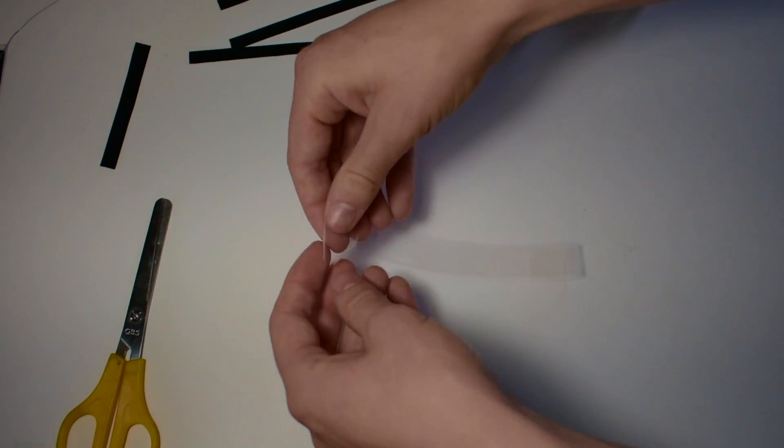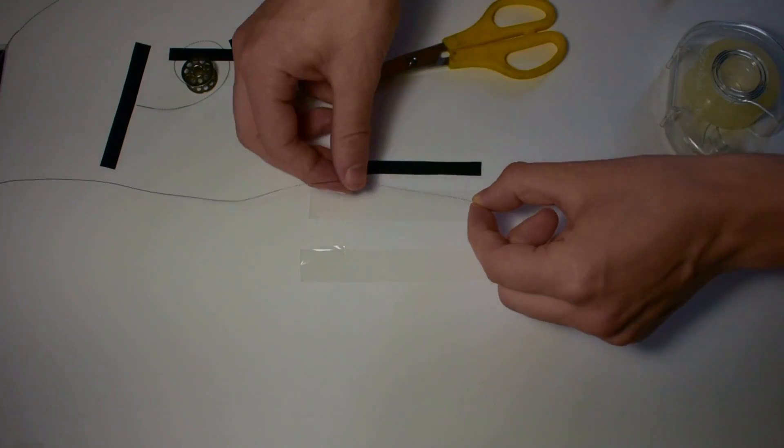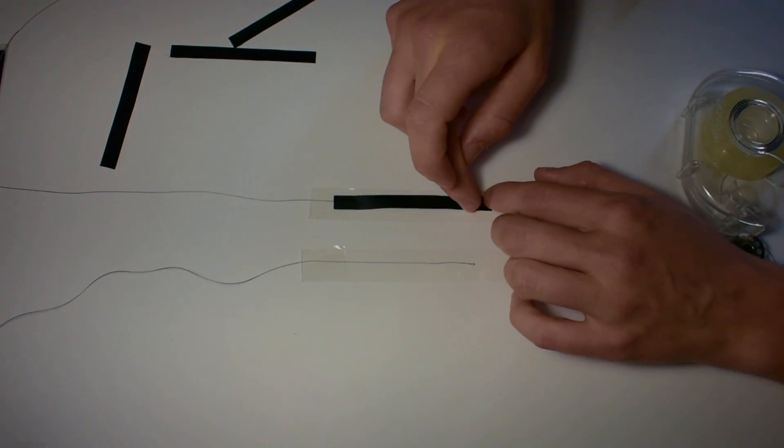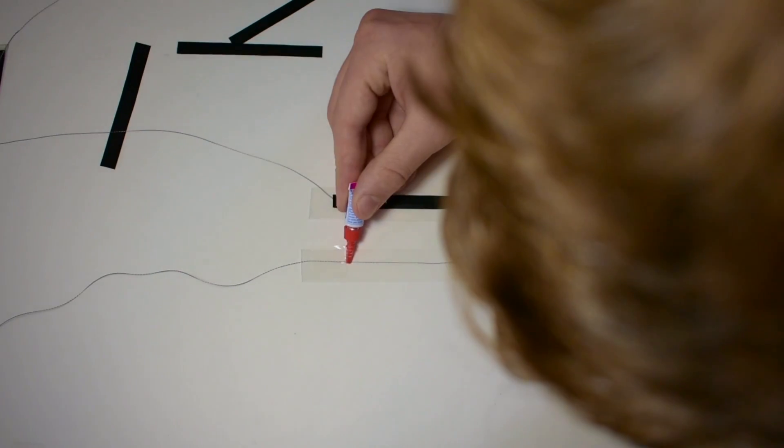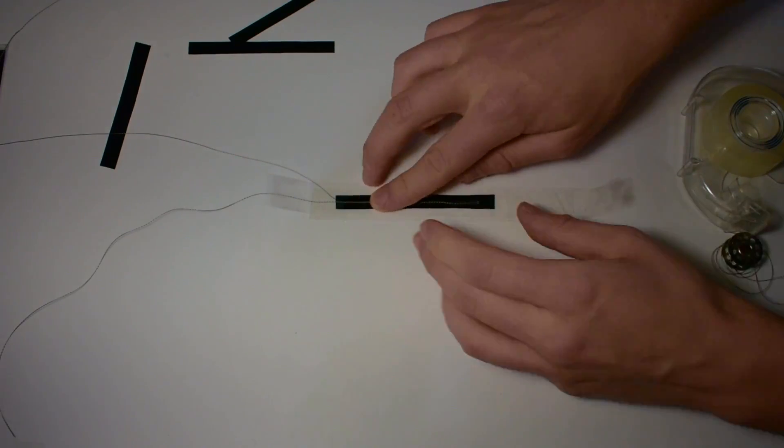While it almost feels like black plastic, it has the unique property of not only conducting electricity, but changing its resistance when flexed. I used several strips of Velostat and placed a length of conductive sewing thread on each side, all sandwiched together by some sticky tape.